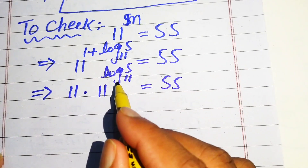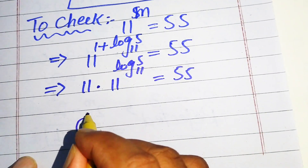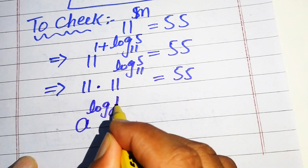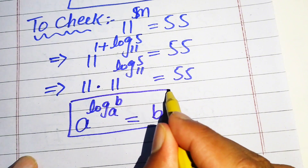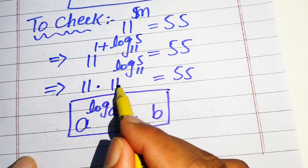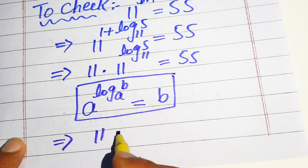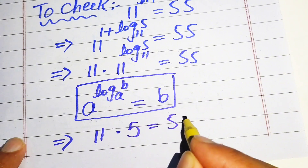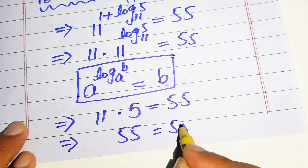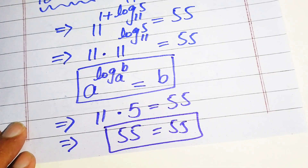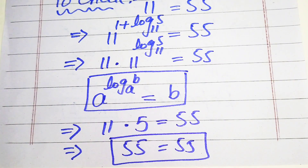We use another property of log: if we have a to the power of log base a of b, it equals b. Applying this result, 11 to the power of log base 11 of 5 simplifies to just 5. So our equation becomes 11 times 5 equals 55, which gives 55 equals 55. This confirms the value of m is satisfied. This is the final answer — thank you so much for watching this video.